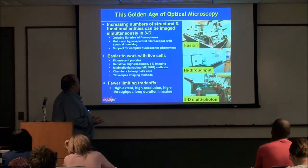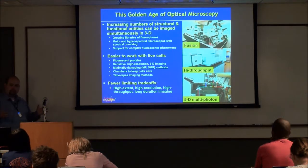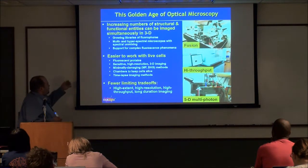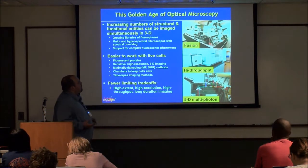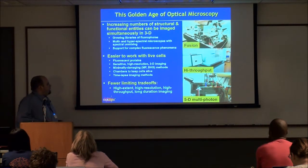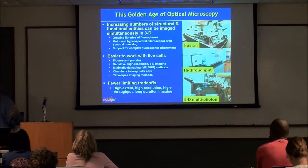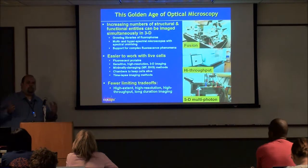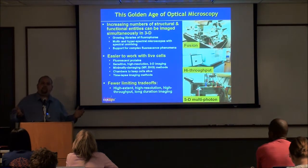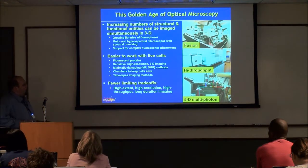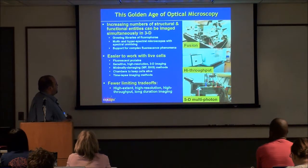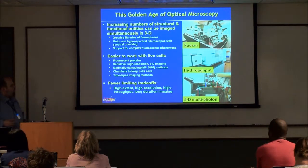Microscopes can deal with complex fluorescence phenomena like fluorescence lifetime, spectra, and harmonic, and you can fuse these methods — one multi-photon microscope can do all of this. You also have practical systems where you can work with live cells. It used to be really difficult to keep cells alive on the stage — you had to figure out CO2 levels and temperature. Now these things are pretty trivial. It's easy to keep cells alive for long periods, and to use techniques that don't kill the cells or bleach them.